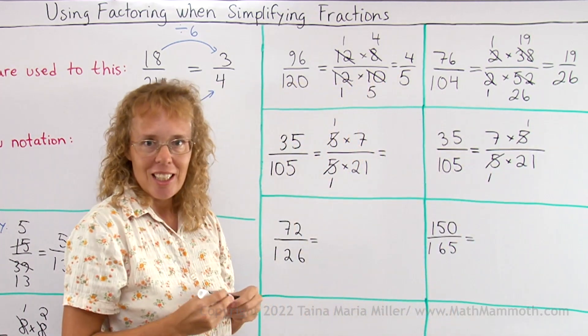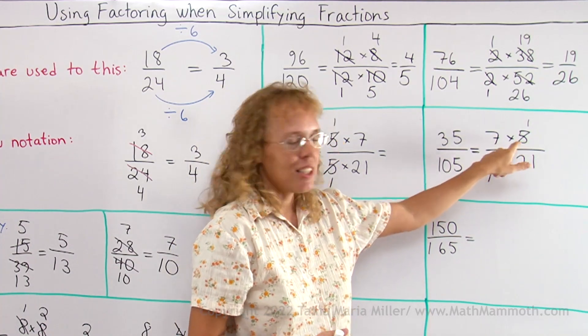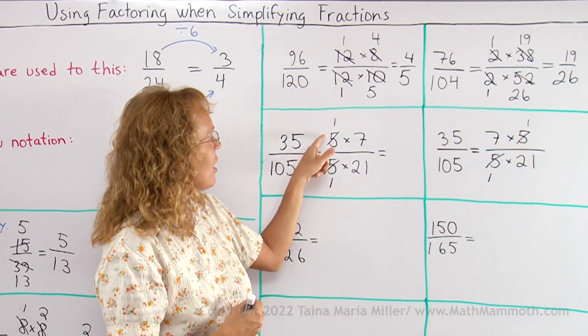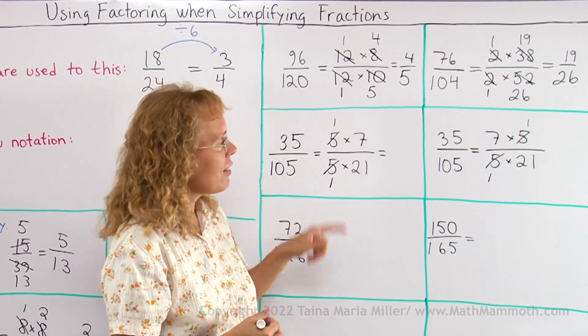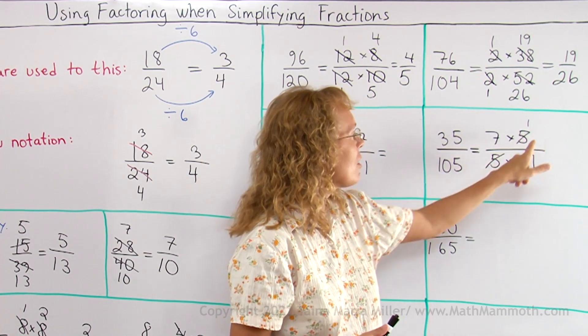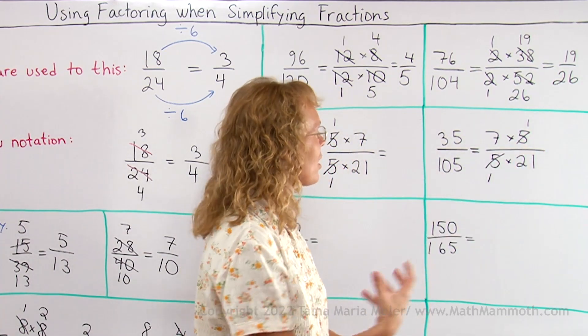But surely I can do that because I could write it as 7 times 5. I could write it in the other order, like here 5 times 7, and then simplify the 5 and 5. It does not matter. You can simplify as long as the same number is here above and same number is here below. You can cancel them out.